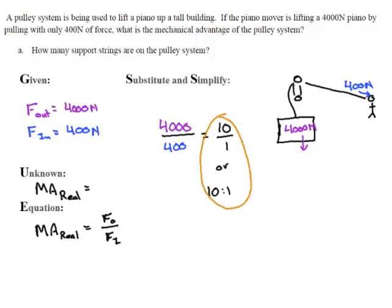How many support strings are on the pulley system? And since I have a 10 to 1 system, that means must have 10 support strings.